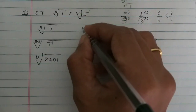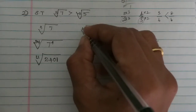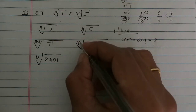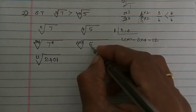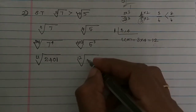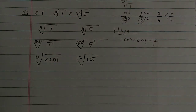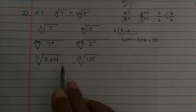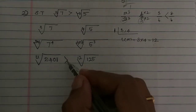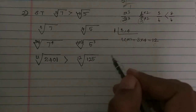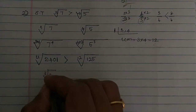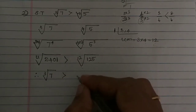Next, there is the 4th root of 5. In this 4, we multiply by 3 to get 12. So we write the order as 12, the base as 5, and the power as 3. Then 4 × 3 is 12, giving the 12th root of 5 cubed, which is 125. So let's write which is greater: 2401 is greater than 125. Therefore, it is proven that the 12th root of 2401 is greater than the 12th root of 125 — that is, cube root of 7 is greater than 4th root of 5.